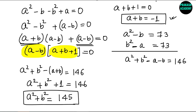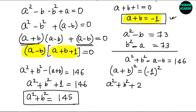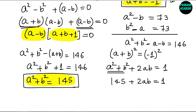Now that we know A² plus B², we can calculate AB. We take A plus B equals minus 1 and square both sides: A² plus B² plus 2AB equals 1. Substituting A² plus B² equals 145, we get 145 plus 2AB equals 1, so 2AB equals minus 144, meaning AB equals minus 72.